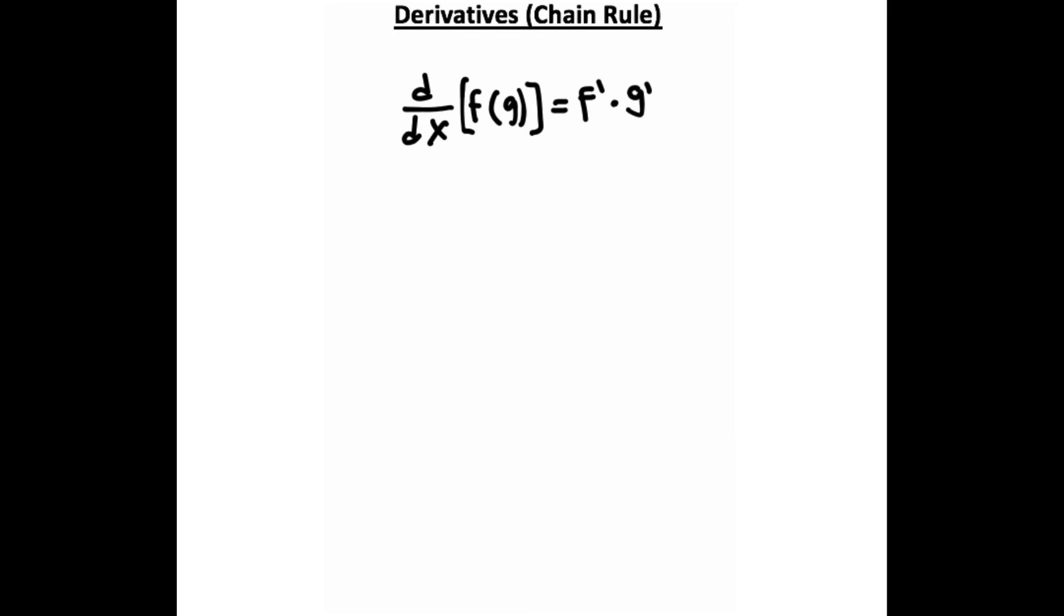Now finally, we're going to talk about the chain rule. You definitely want to make sure you know this one. The chain rule works by taking the derivative of the outside multiplied by the derivative of the inside. So if we want to take the derivative of this right here, well, the derivative of cosine is actually negative sine, and then we'll keep the inside term the same.